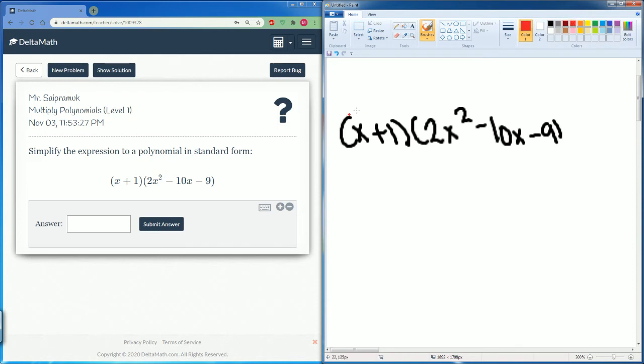Distribute the x over. x times 2x squared gets you 2x cubed. x times negative 10x gets you negative 10x squared. x times negative 9 gets you negative 9x.